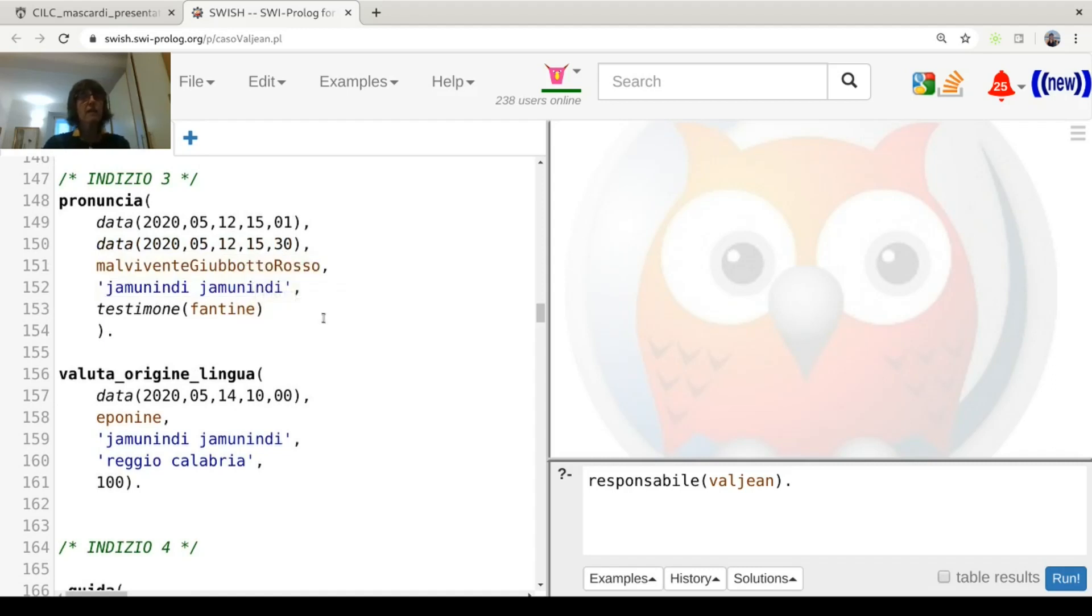Then we started to model evidences that are real evidences, at least as far as the first three evidences, for example, the fact that that person BC, Valjean in our case, was stated yamu ndi yamu ndi to his partner in crime. And the person who was supposed to be that person who had an integral helmet for the motor, so it could not be seen, was also born in Reggio Calabria, and actually yamu ndi yamu ndi is a sentence from Reggio Calabria, from Calabria. And this was a real evidence.